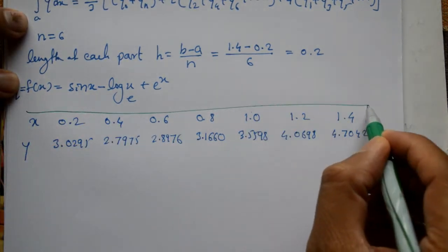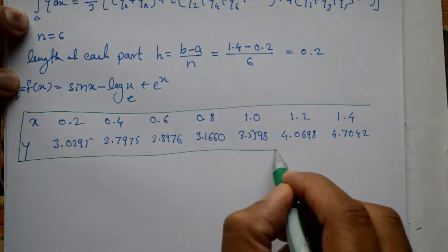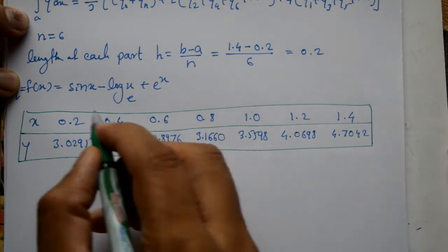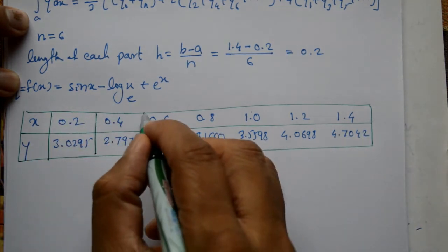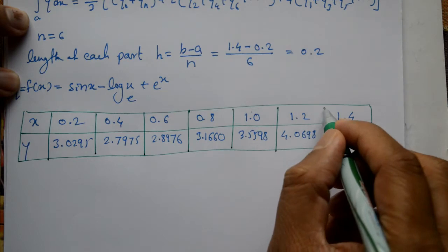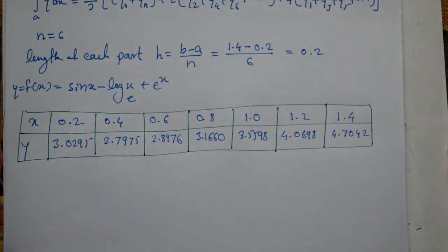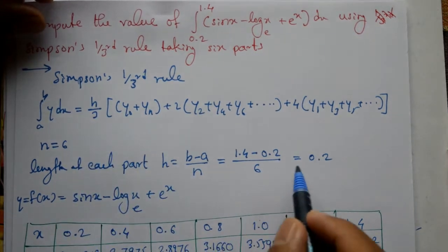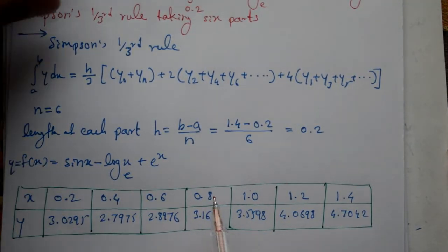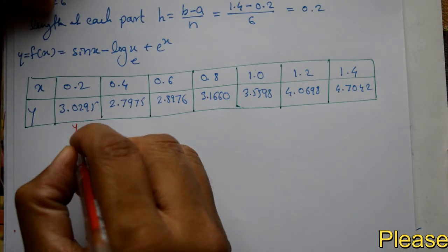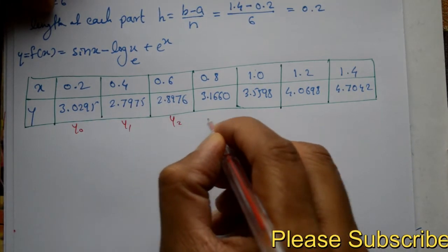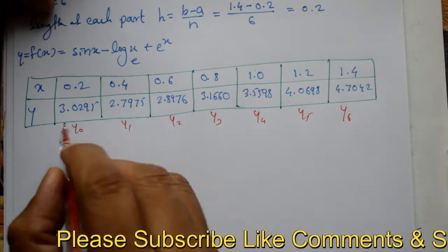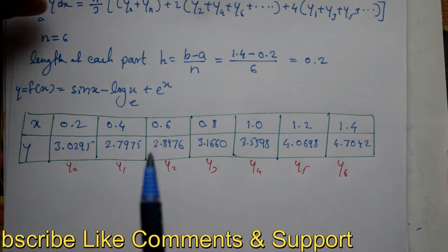The table is constructed. We have h equals 0.2 and all y values. These are y0, y1, y2, y3, y4, y5 and y6. First value and last value.